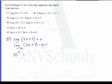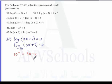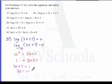So we have 10 raised to 0 is equal to 3x plus 7. Anything raised to 0 is equal to 1, so 1 is equal to 3x plus 7. Rearranging gives us 3x is equal to 1 minus 7, which is negative 6. Therefore x is equal to negative 2.